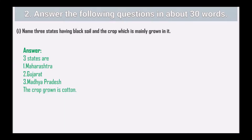Next question: answer in about 30 words. Name three states having black soil and the crops mainly grown in it. The three states are Maharashtra, Gujarat, and Madhya Pradesh. The crop mainly grown is cotton.